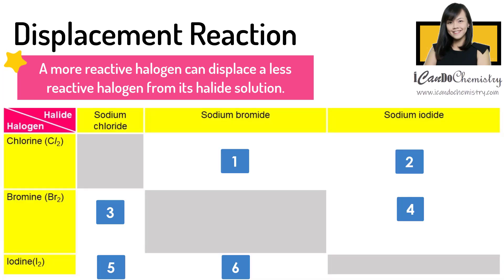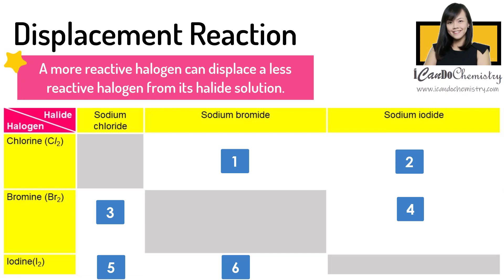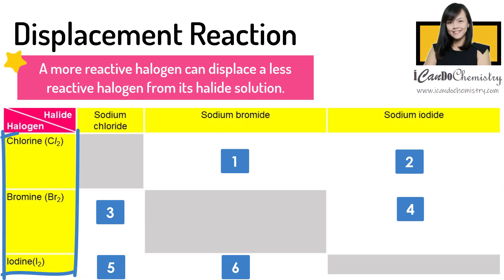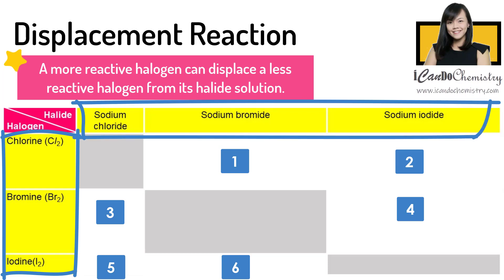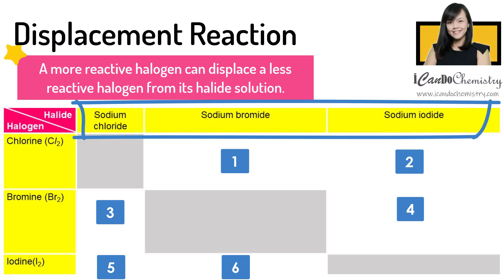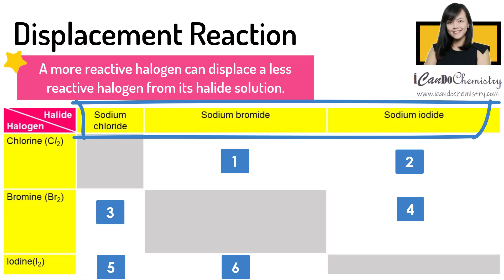Now let's focus on six possible scenarios, adding three different halogens — chlorine, bromine, and iodine — into three different halide solutions. For simplicity, let's make all of them sodium halide solutions.